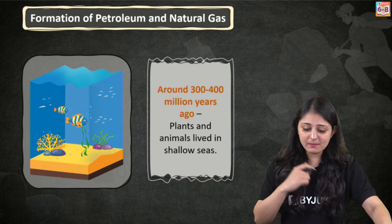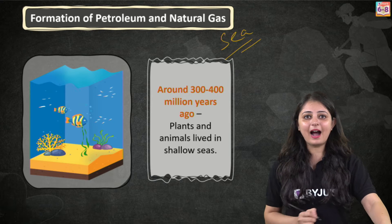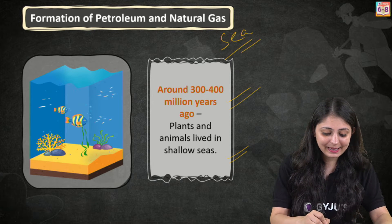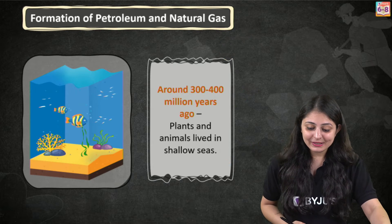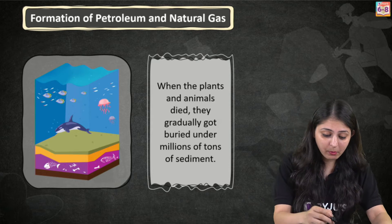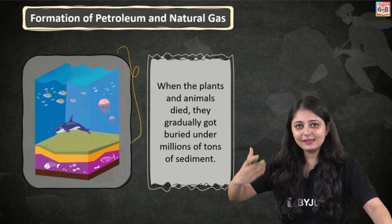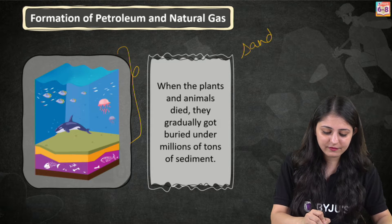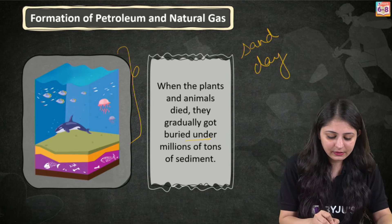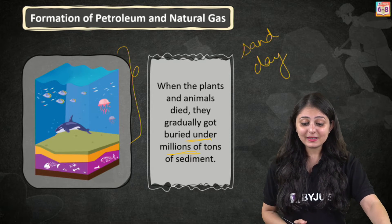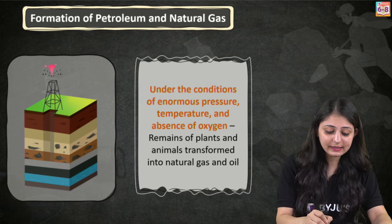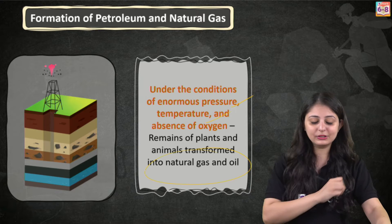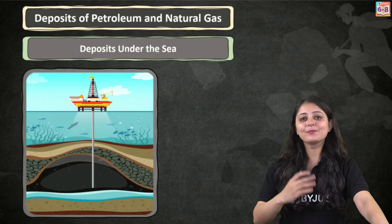Petroleum is formed from organisms living in the sea. We'll have to go 300 to 400 million years back. Plants and animals lived in shallow seas, and as they died, their bodies settled at the bottom of the sea. Their bodies started settling at the bottom and got covered with layers of sand and clay. They got buried under millions of tons of sediment. As they got compressed, pressure increased, temperature increased, and in the absence of oxygen, they got converted into natural gas and oil.